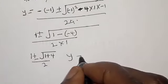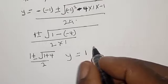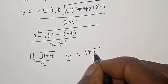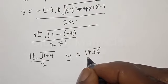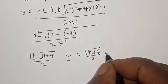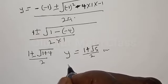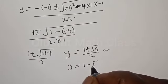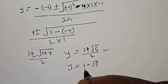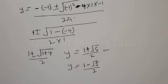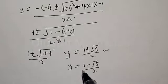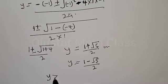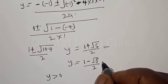Therefore, y is equal to 1 plus square root of 5 over 2, or y equal to 1 minus square root of 5 over 2. But in this case, we know that y is greater than 0. Therefore, we reject the negative solution.